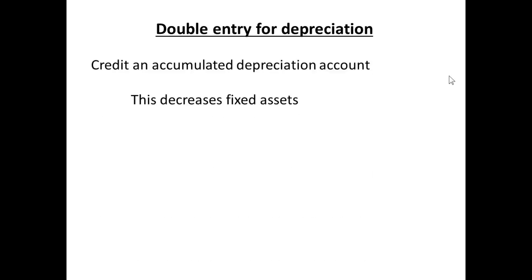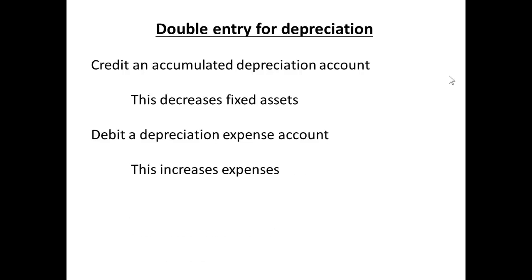How do we record depreciation in the accounts? It is, of course, going to be a double entry. We credit and accumulate a depreciation account, which essentially decreases fixed assets. And we debit a depreciation expense account, which will increase expenses.